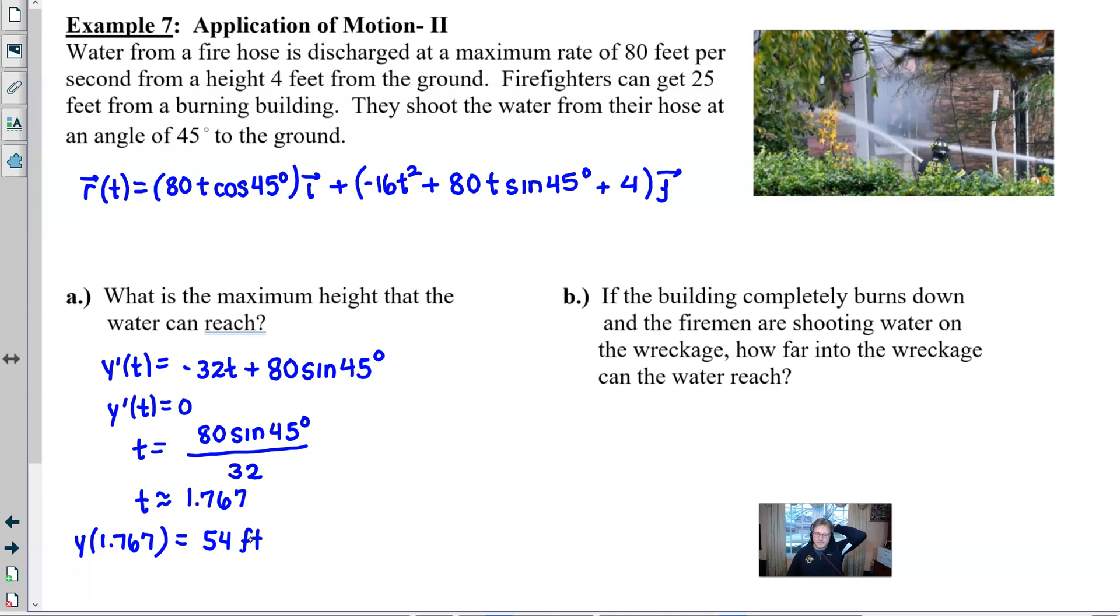Now for Part B. The question reads, if the building were to completely burn down, but the firemen still have to make sure that they take care of any everlasting embers that are aglow. So they're going to still be shooting the water into the wreckage. They want to know how far the firemen can shoot into the wreckage. And you have to remember that firemen can still only get 25 feet from the building.